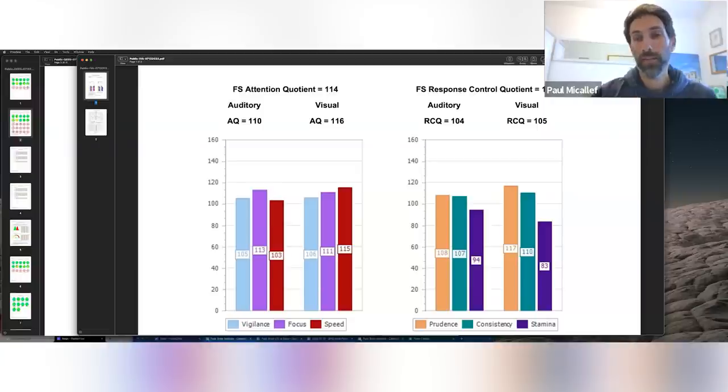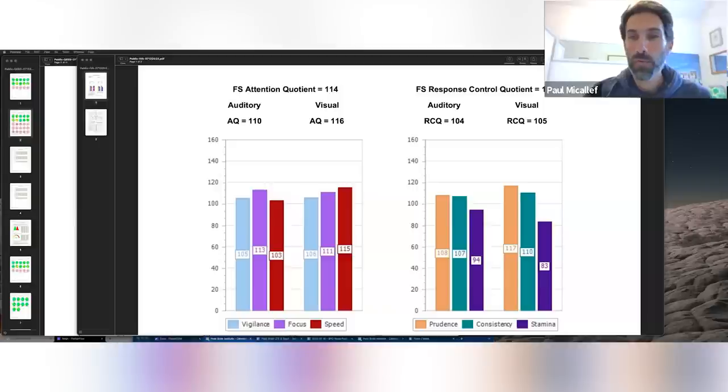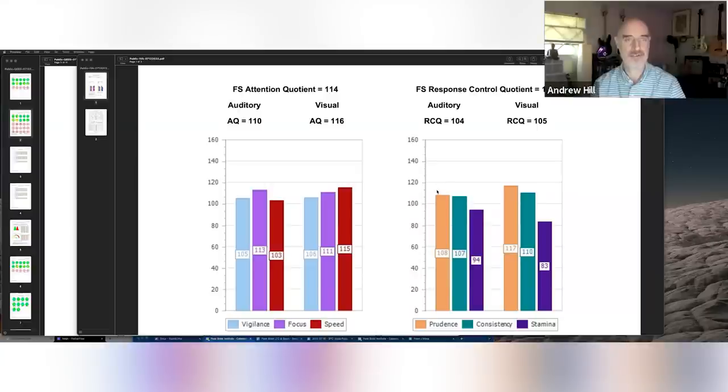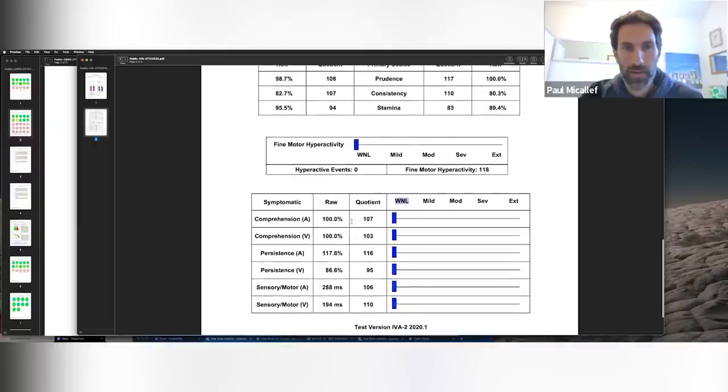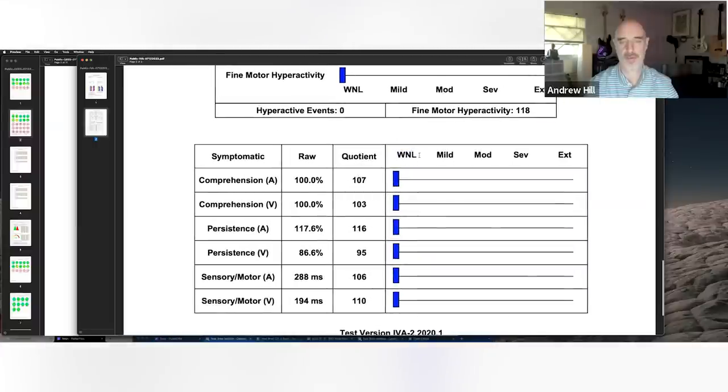I'm curious how the carefulness gets measured in the test, because that matches my experience. Overall how it comes across is I do reasonably well on these things but it's because I'm extremely careful and I get very tired. Prudence is what happens after you start to make a mistake - what happens the next trial? Do you correct, do you make the same mistake? Stamina is the big takeaway here.